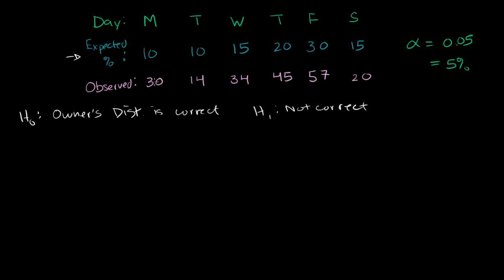I'm going to calculate a statistic based on this data — a chi-square statistic. That statistic will have approximately a chi-square distribution. Given that it has a chi-square distribution with a certain number of degrees of freedom, I want to see if the probability of getting a result this extreme or more extreme is less than 5%. If so, I'll reject the null hypothesis. If the probability is greater than my alpha of 5%, I won't reject it — I'll have no reason to assume the owner is misrepresenting the distribution.